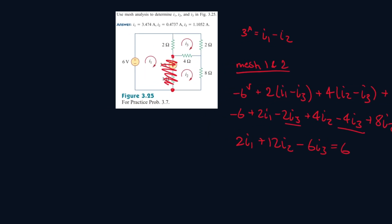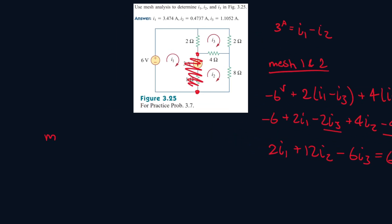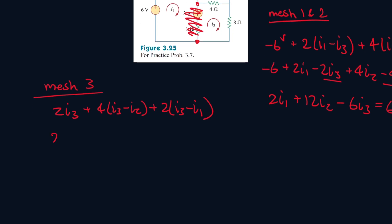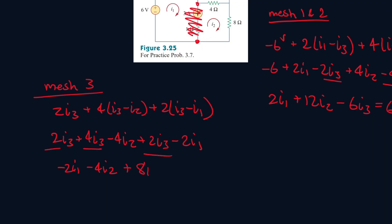Now let's work with our I3 mesh — mesh 3. So: 2I3 plus 4(I3 minus I2) plus 2(I3 minus I1). Let's collect like terms. There's only one I1, so it'll be minus 2I1. There's only one I2, so it'll be minus 4I2. Then we have three I3 terms, so it'll be 8I3 equals 0.